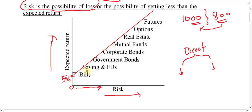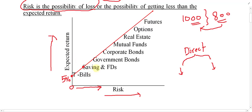If you move upward from treasury bills, there is another security called saving and fixed deposit — when you deposit to the bank. In this case, risk is less but the chance of profit is also less. For example, profit might be ten percent, but risk might also be, say, four percent. So as much as you move upward, risk increases but return also increases.